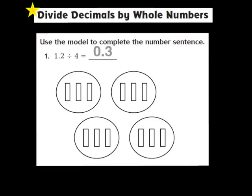I'm going to draw a quick picture to represent 1 and 2 tenths. I'm going to draw 1 flat to represent the 1, and then I'm going to draw 2 tenths to represent the 2 tenths. Our next step is to draw 4 circles to represent the divisor, because 4 is our divisor in the problem. I can't divide 1 whole into 4 different groups.